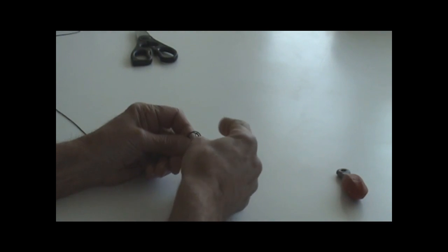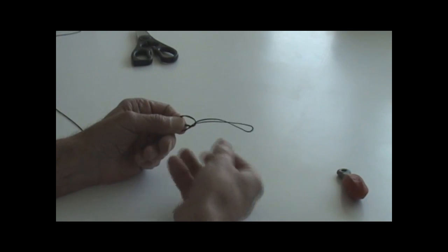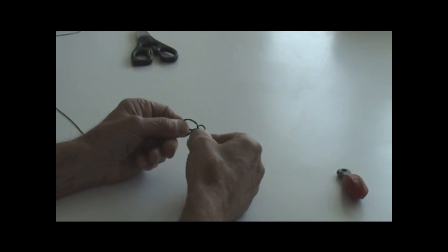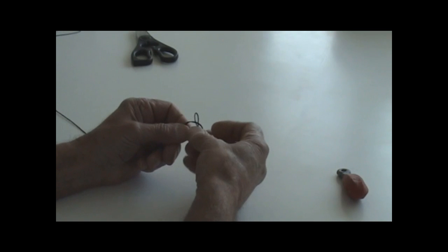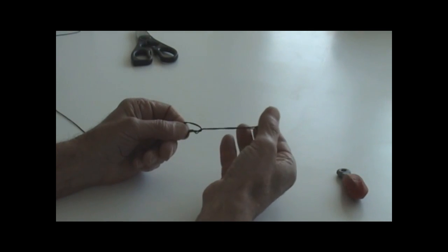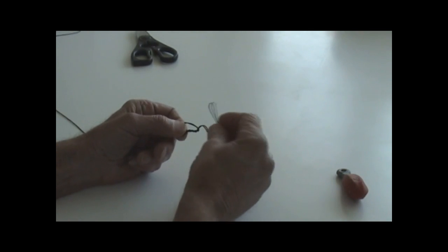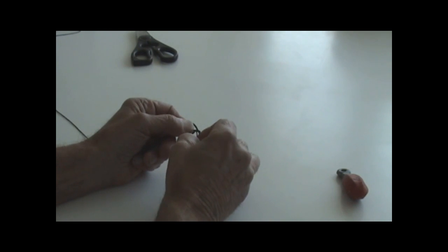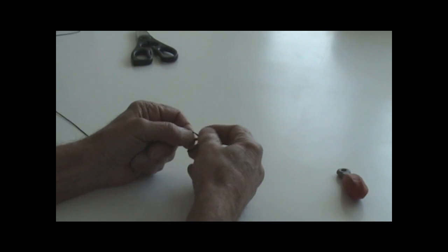Take your long end, pass it through the loop once, pass it through the loop twice, pass it through the loop three times.